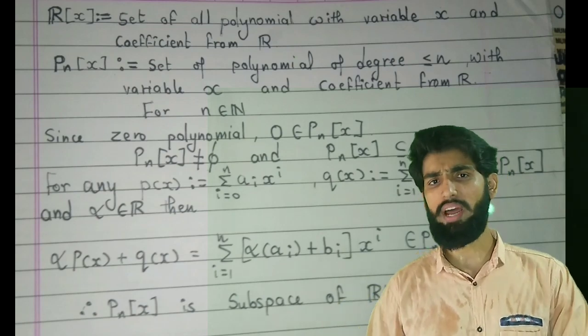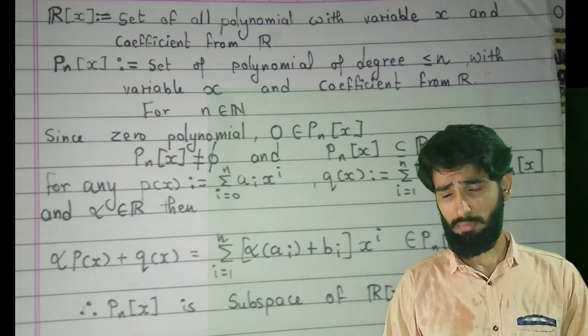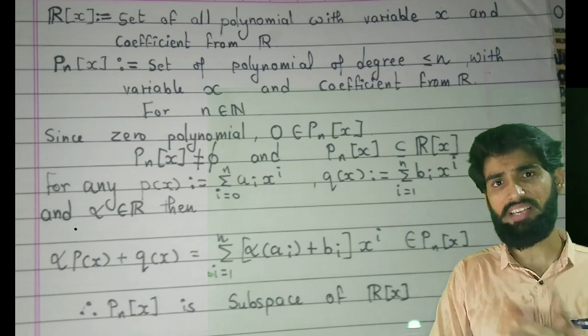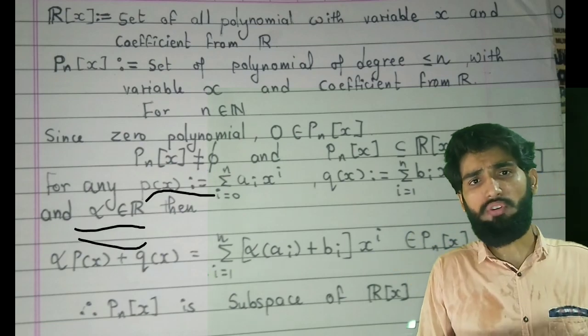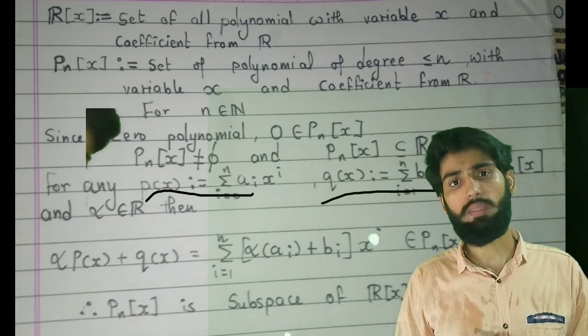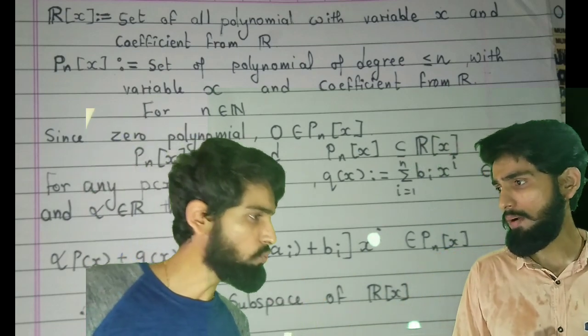Now what we'll do, we will check that alpha w_1 plus w_2 is an element of that P_n[x]. So what we consider is we consider an alpha inside R and p(x) and q(x) inside that P_n[x].